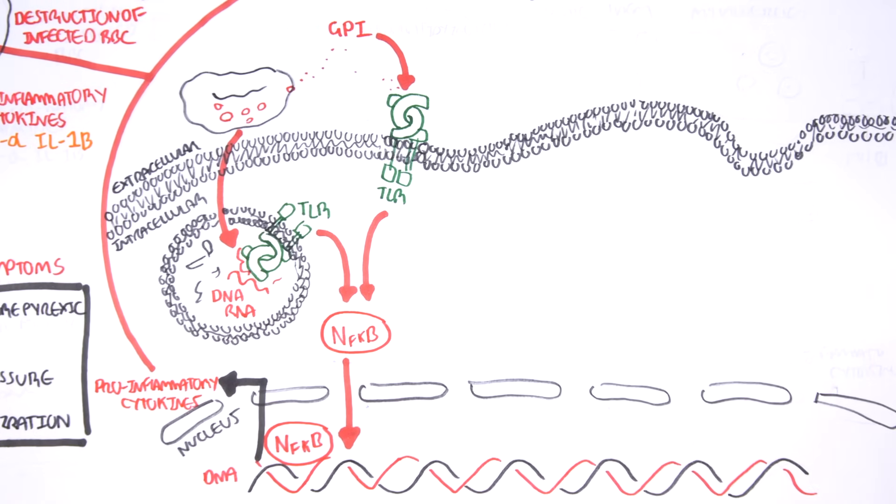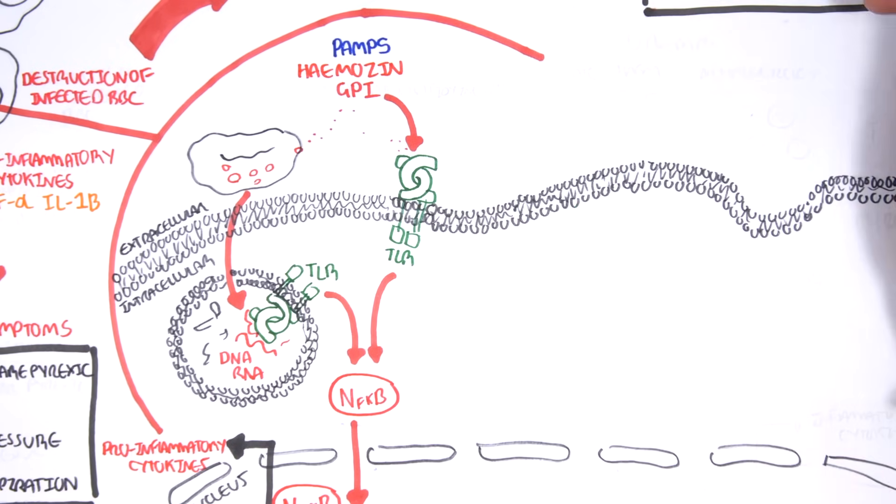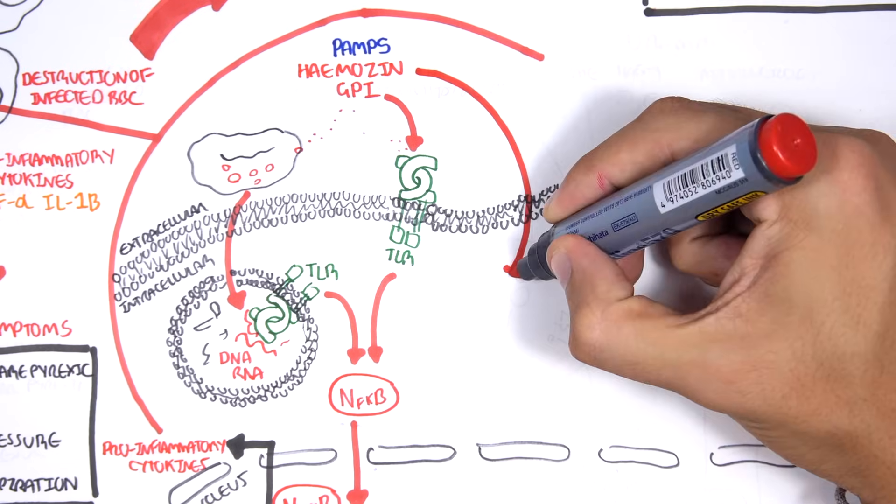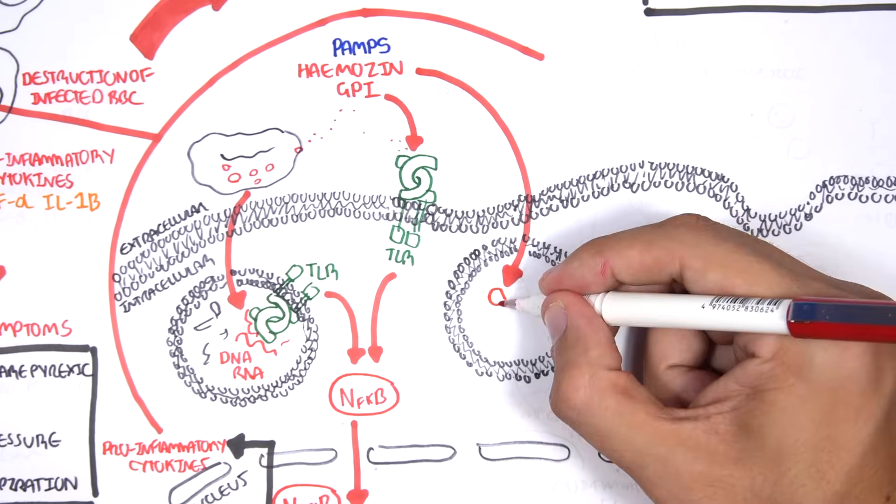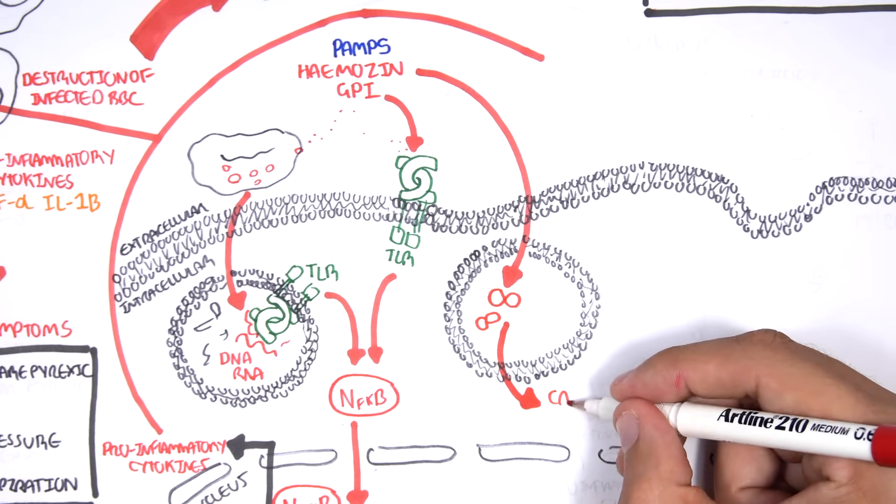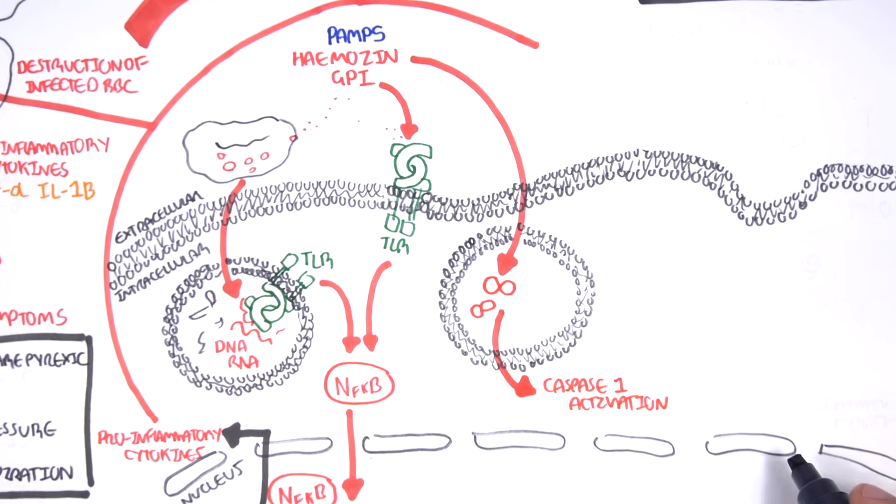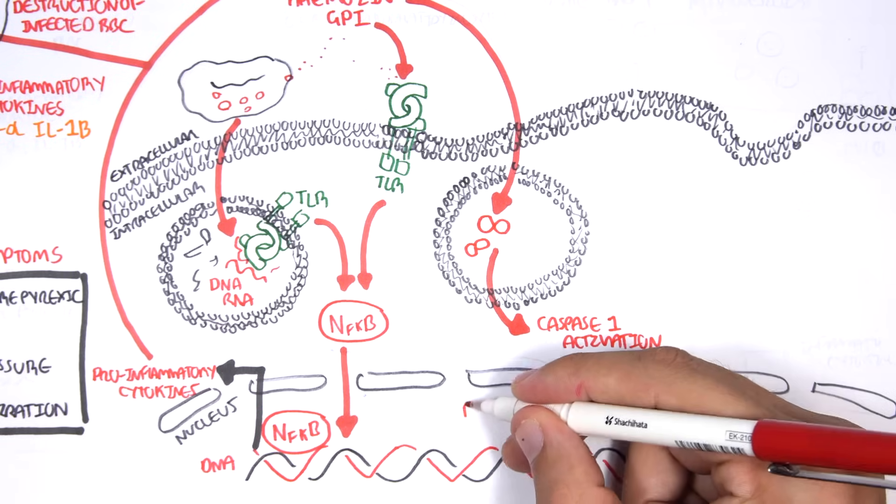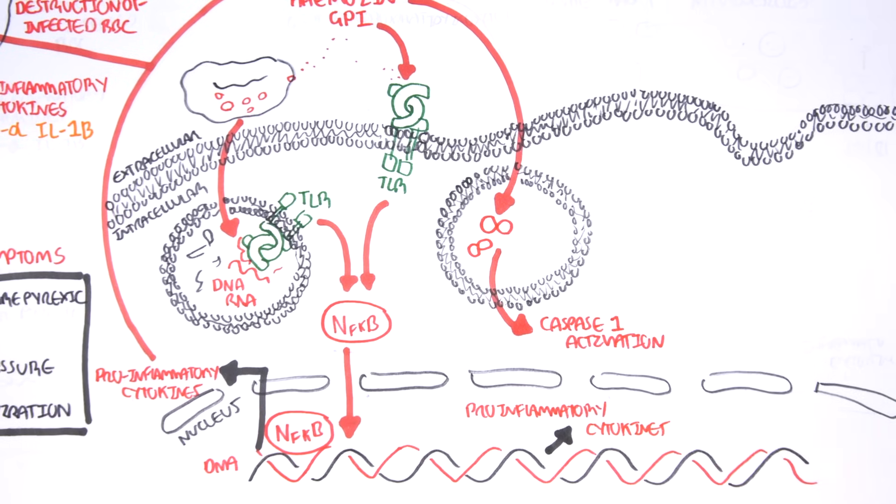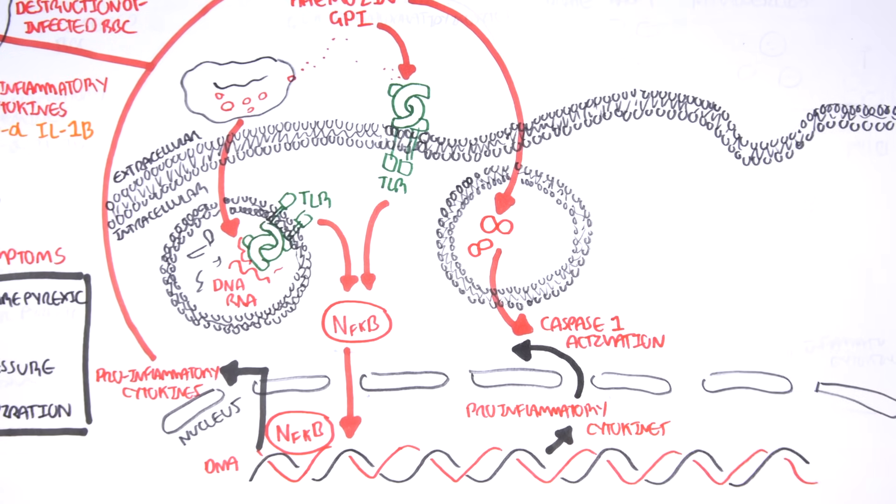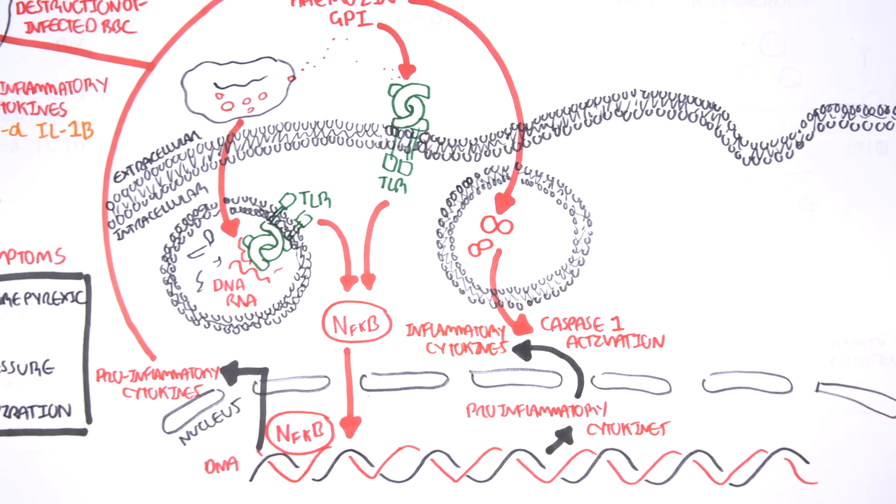Another pathogen-associated molecular pattern is hemozoin, which is a product of parasite metabolism of heme within red blood cells. Hemozoin are released, which can be taken up by macrophages. Hemozoin, through several processes, can lead to the activation of caspase-1. Caspase-1 is a molecule complex responsible for activating the pro-inflammatory cytokines. So it will convert the pro-inflammatory cytokines to cytokines. I hope that makes sense. So it converts the pro-interleukin-1b to the active interleukin-1b.